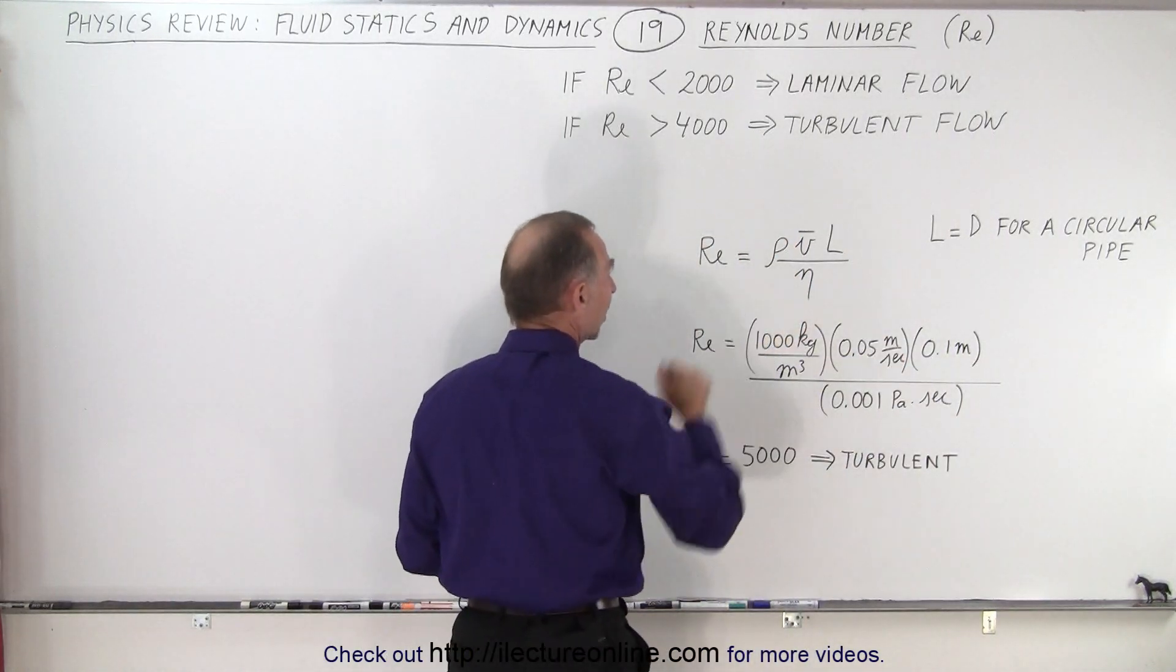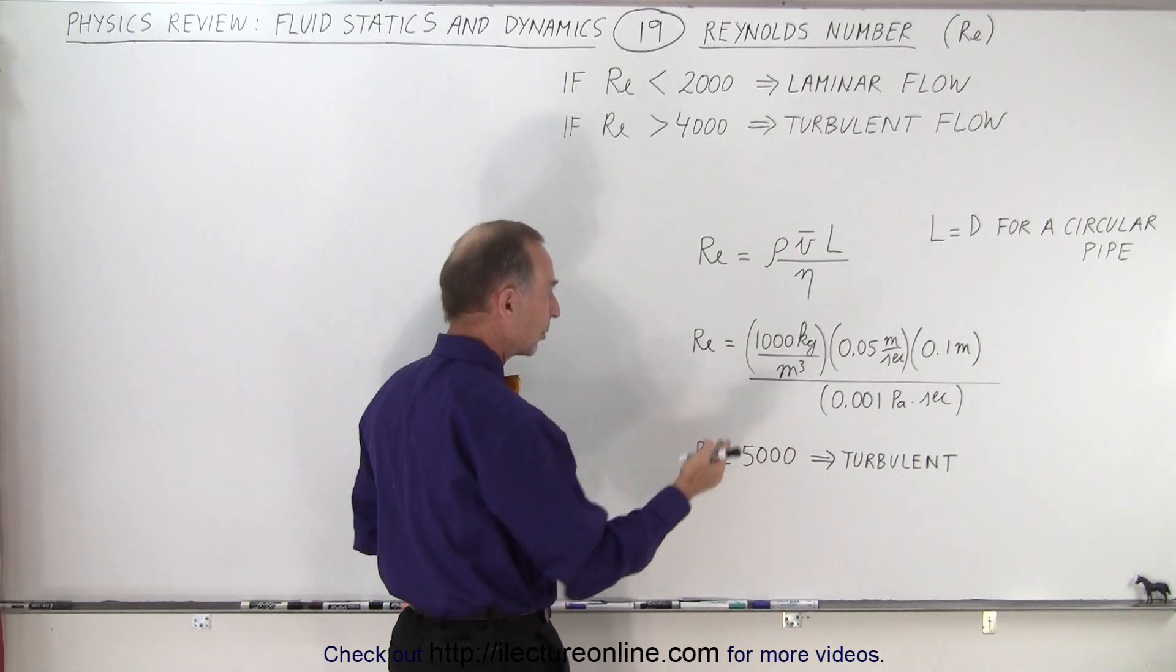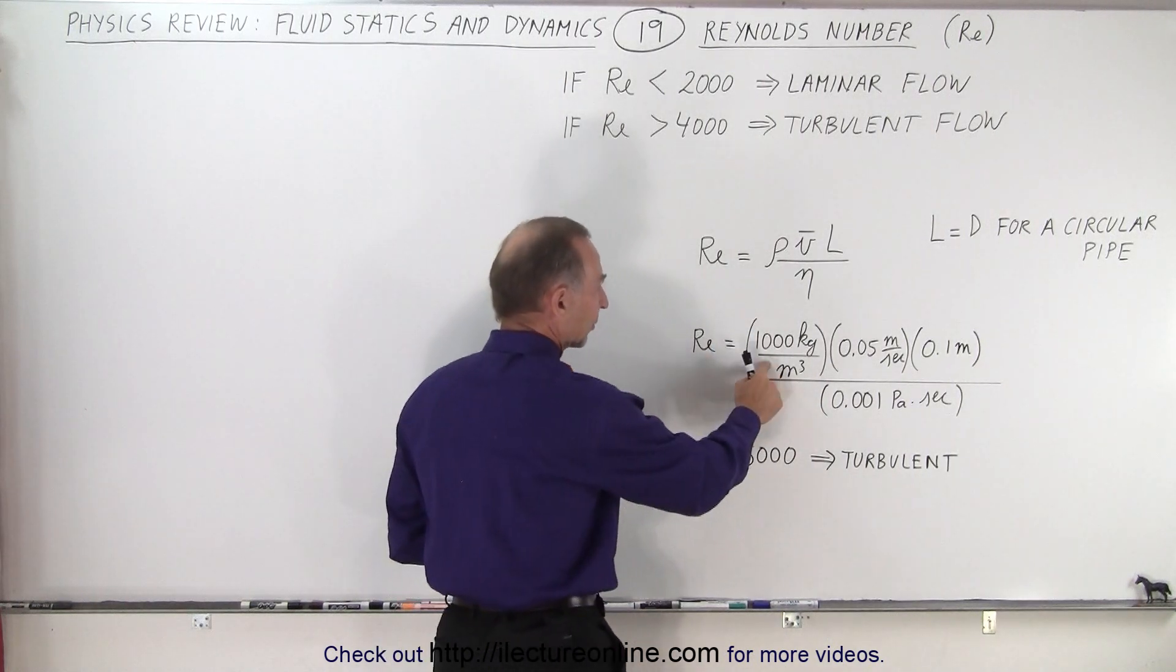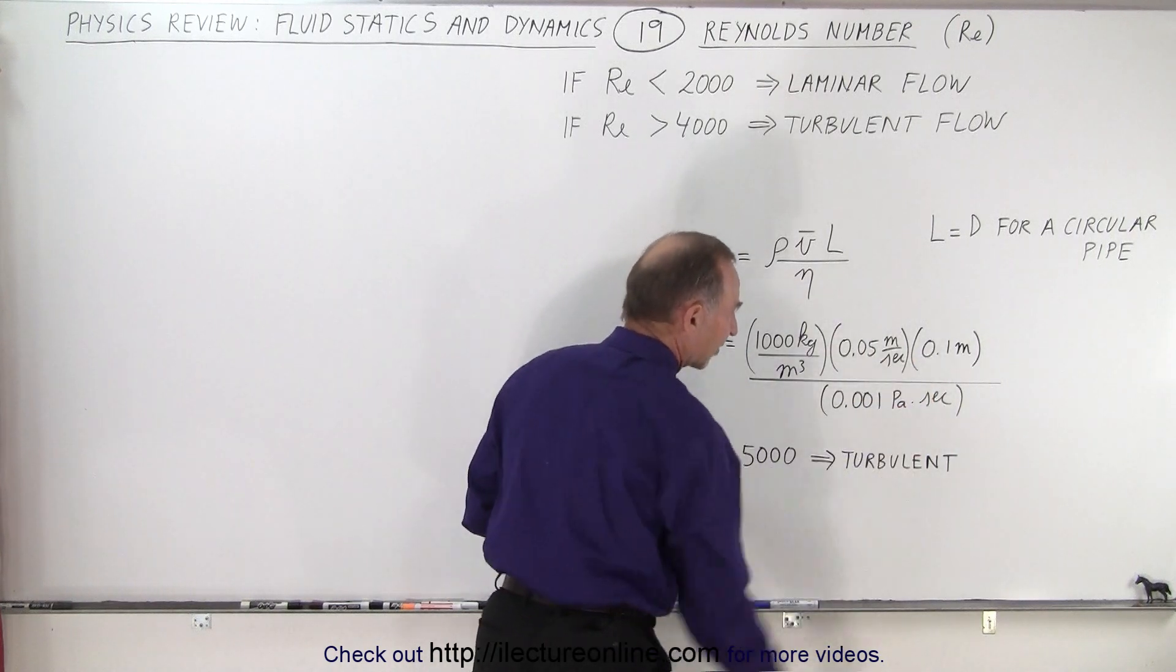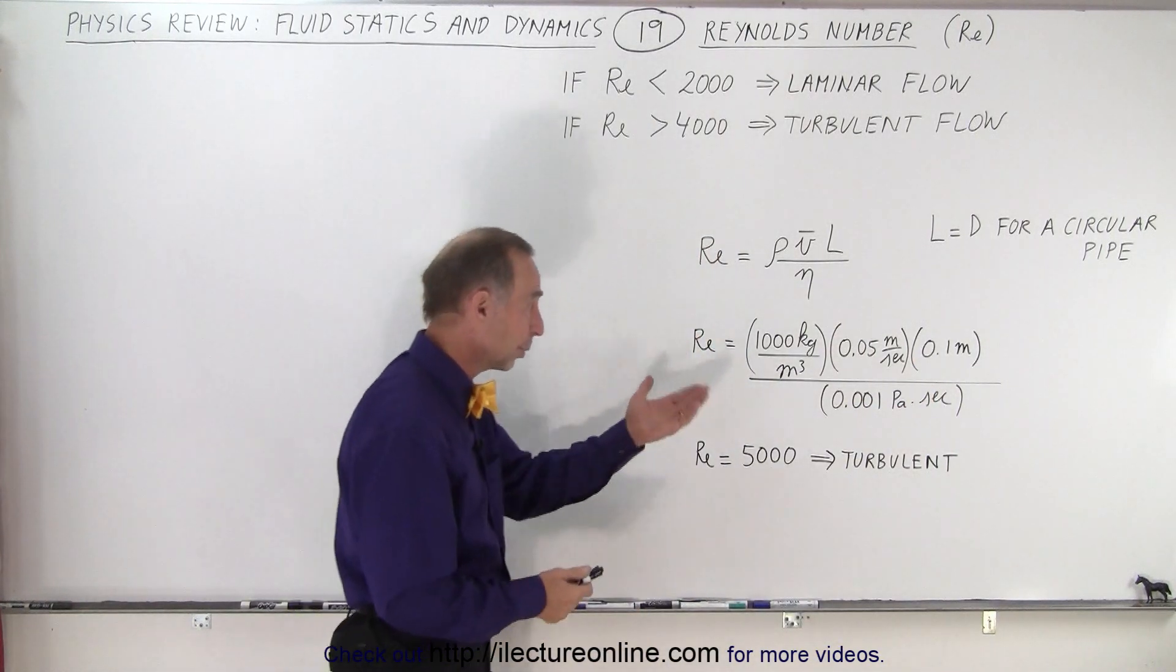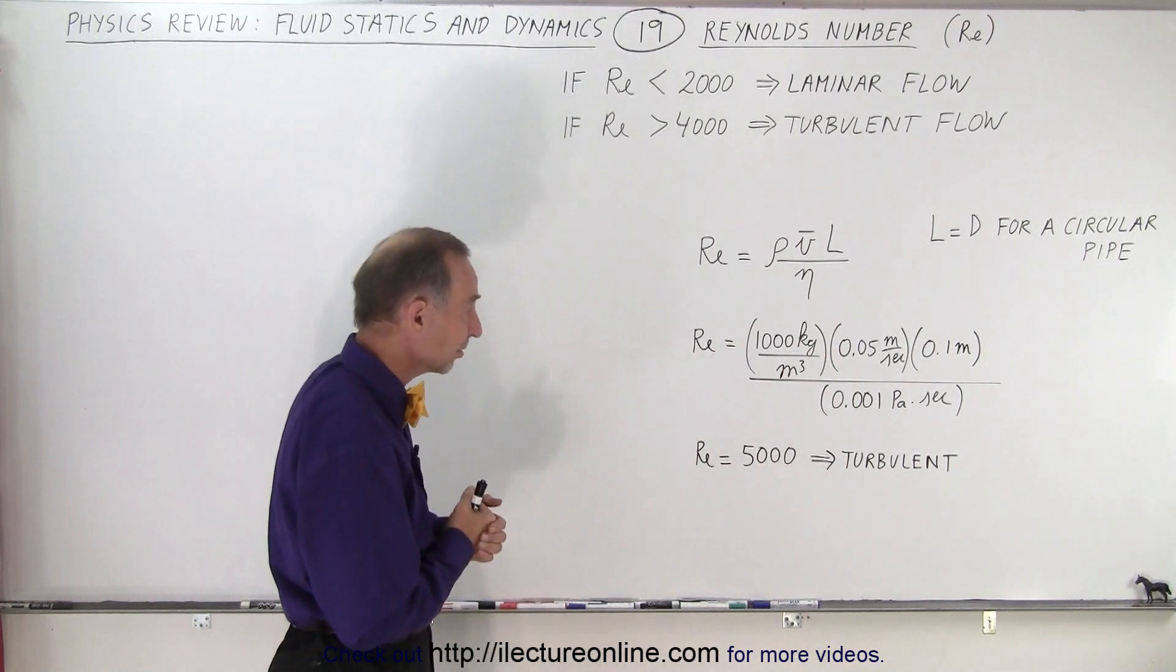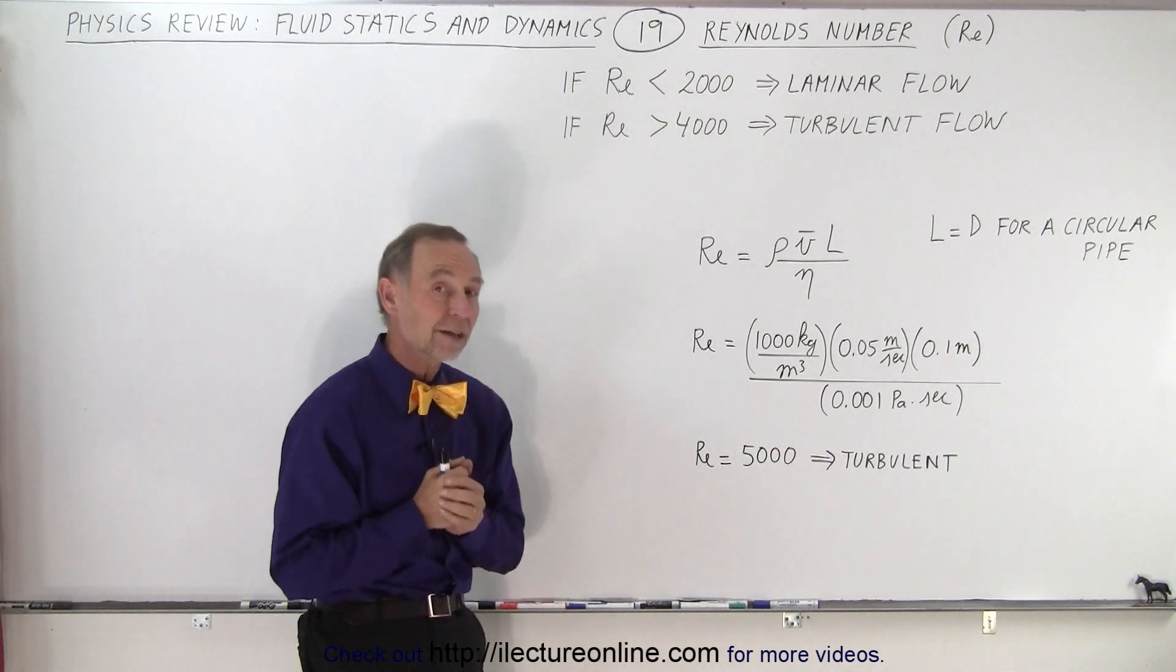And we divide that by the viscosity of the fluid. Look, some typical numbers for water: 1,000 kilograms per cubic meter, let's say it's moving at 5 centimeters per second, the pipe is 10 centimeters in diameter, and the viscosity is 0.001 pascal seconds. And we get the number 5,000.